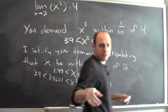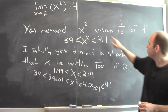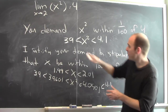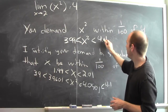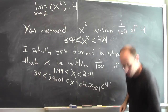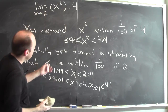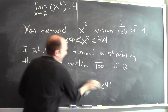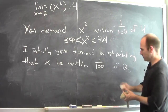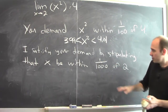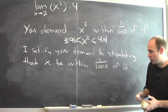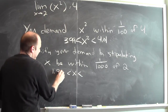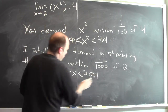Now, I can do the same thing for other demands you might make. You might have demanded that x squared be within a hundredth of 4 — and I can do that as well. That would mean that x squared is between 3.99 and 4.01. If you want x squared to be between 3.99 and 4.01, I'm going to have to make some condition on how close x has to be to 2. So let's try a thousandth. If x is within a thousandth of 2, that means x will be between 1.999 and 2.001.